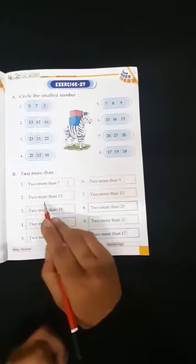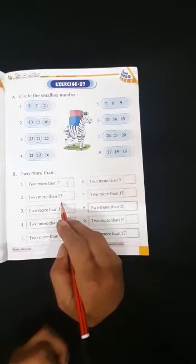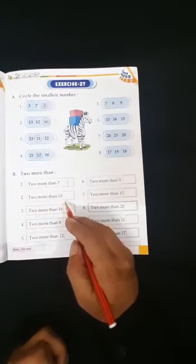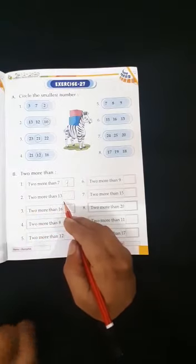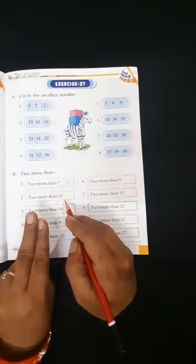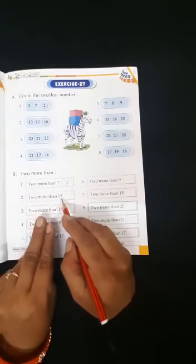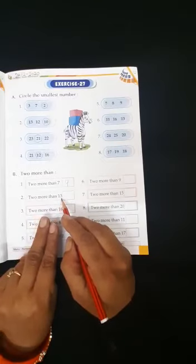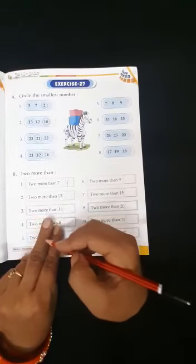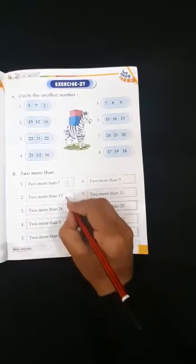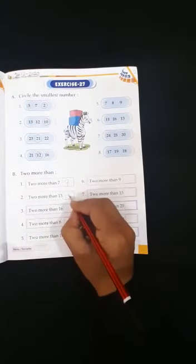Number 2. 2 more than 13. Yes, after 13, we add 2 numbers. So, take out 2 fingers and count after 13, 2 numbers. After 13, 14, 15. So, answer will be here 15.